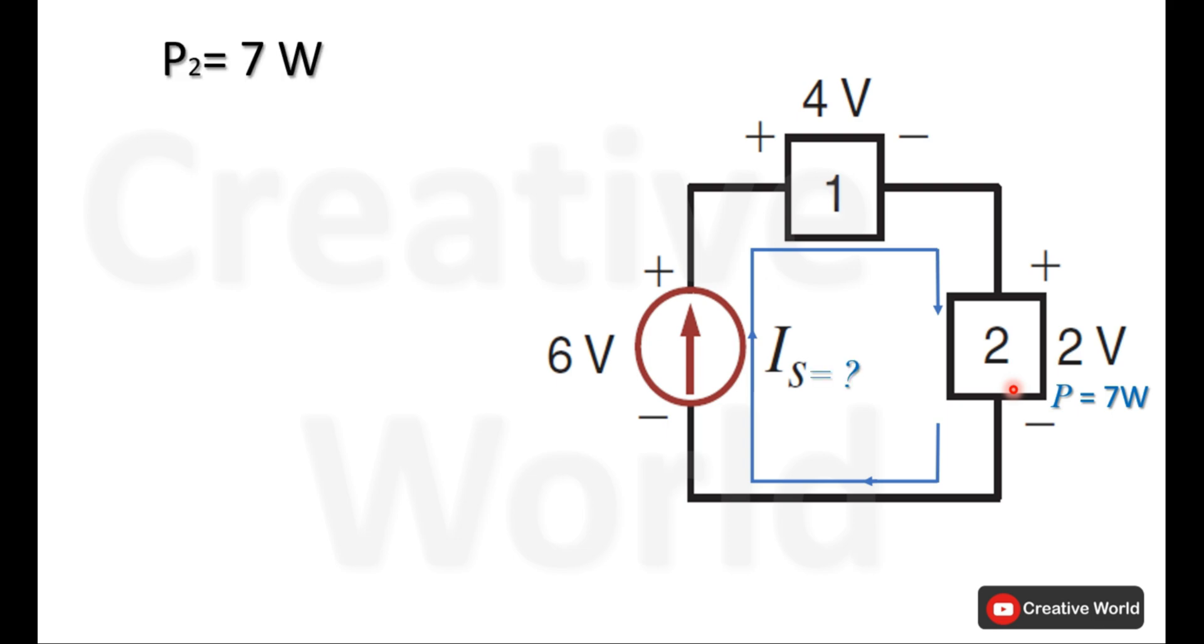V2 across this element is 2 V. Using power formula, voltage multiply by current. And in order to calculate current, voltage will be divided on both sides. Is will be 7 Watt divided by 2, and Is is 3.5 A.